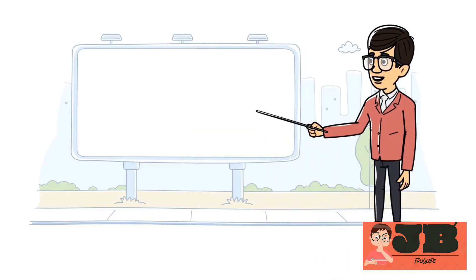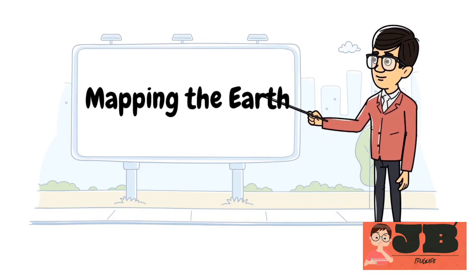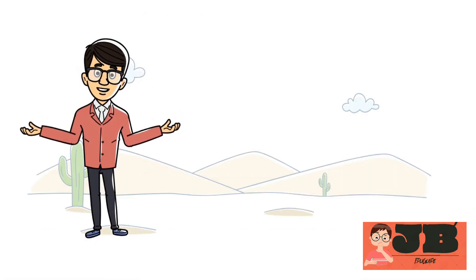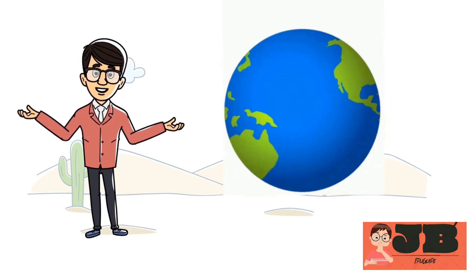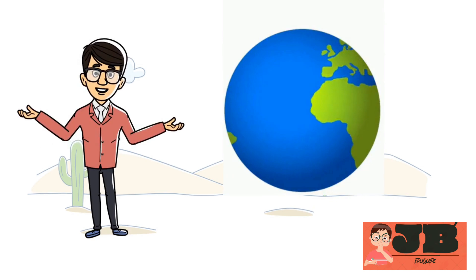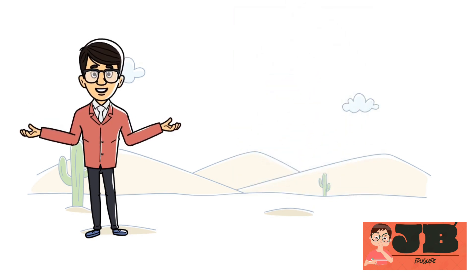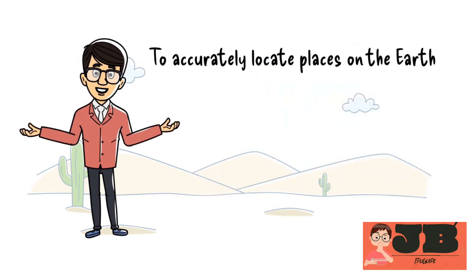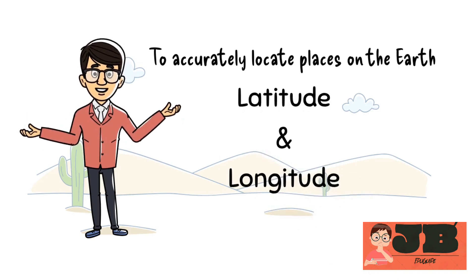Next we will discuss about mapping the Earth. The Earth is a sphere, so representing it on a flat map can be challenging. A globe is a more accurate way to represent the Earth because it maintains the correct proportions and distances. But globe is not appropriate to keep all the time. So maps are more convenient for many purposes. To accurately locate places on the Earth, we use a coordinate system based on latitude and longitude. So, dear students, let's understand about latitude and longitude.